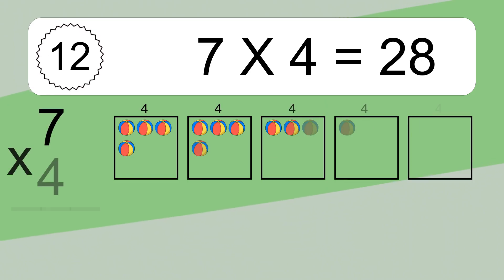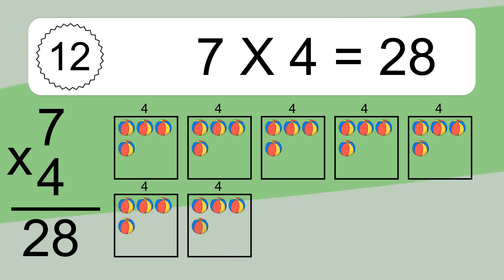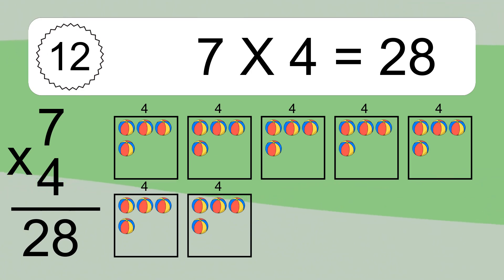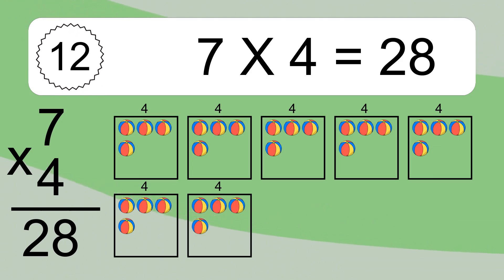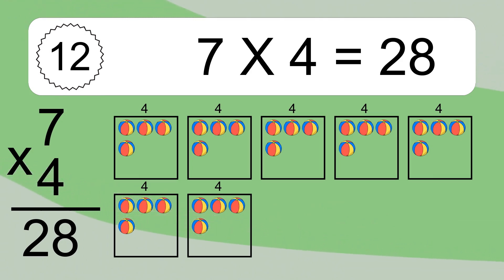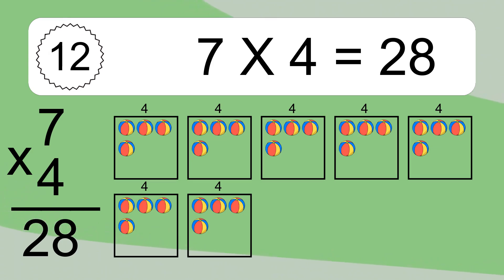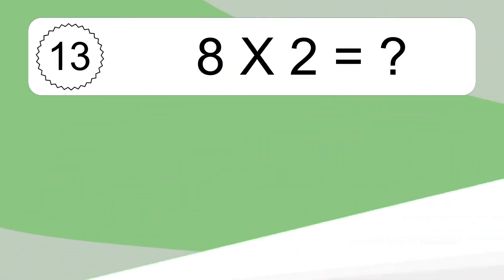7 times 4 equals 28. We have 7 boxes, and each box has 4 colorful balls inside. If you count all the balls in all the boxes together, you will have 7 times 4 balls. This equals 28 balls.